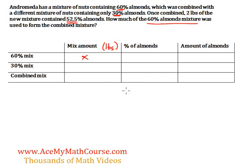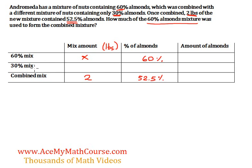We can fill out the table, which is going to help us quite a bit. We know that once combined, 2 pounds of the new mixture contained 52.5% almonds, so 2 pounds goes in the combined mix row with 52.5% almonds. The 60% mix has 60% almonds and the 30% mix has 30% almonds.